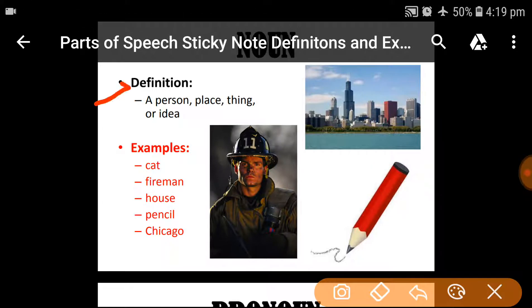Definition of noun: a person, place or thing or idea. These are the nouns. Person means a person, place means a location, thing means an object.